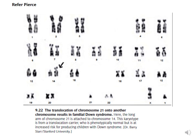This is a karyotype of a person who is suffering from familial Down syndrome. A part of chromosome number 21 has translocated to chromosome 14. The arrow shows that this chromosome 14 has a part of the long arm of chromosome 21 translocated onto it. This person having this karyotype suffers from familial Down syndrome because there are three copies of the 21st long arm chromosome. The caption says: the translocation of chromosome 21 onto another chromosome results in familial Down syndrome.